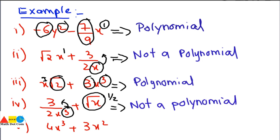In the last example, the exponents are non-negative integers, and all coefficients are real numbers. All three conditions are satisfied, so this expression is clearly a polynomial.